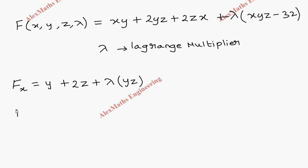Then we have to do partial differentiation with respect to y, so first term is x, second term is 2z, third term is 0, then lambda xz. Then partial differentiation with respect to z: first term is 0, then 2y plus 2x plus lambda xy.